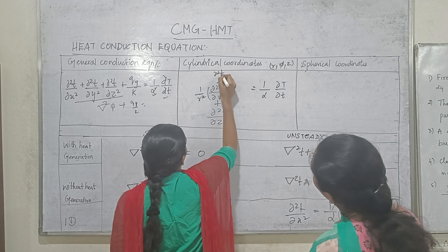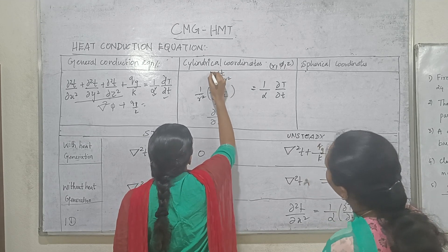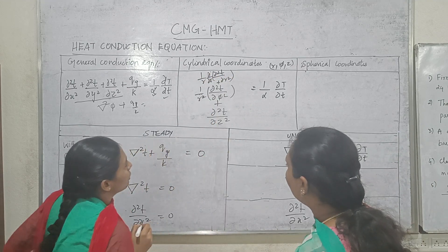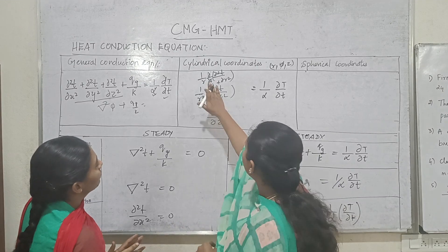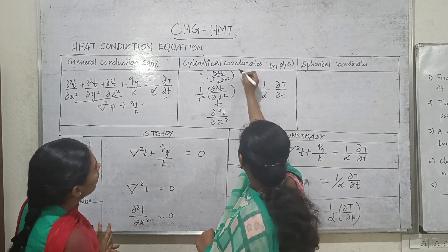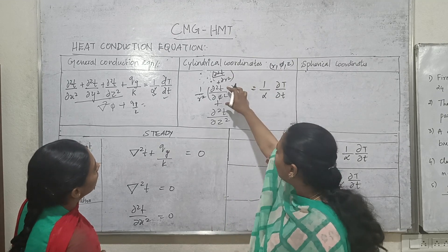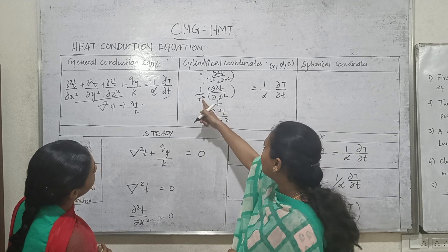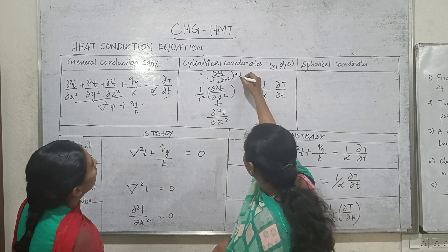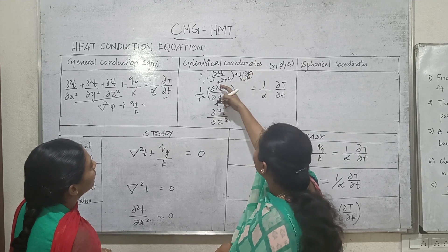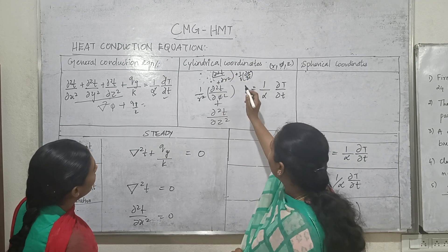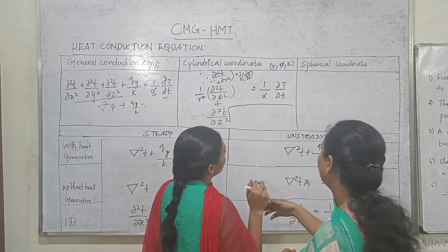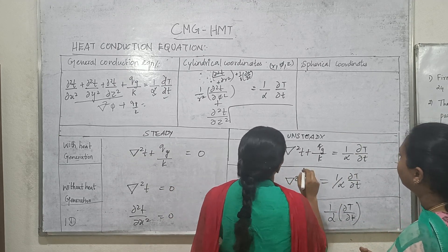For the r direction: ∂²T/∂r², plus (1/r)·∂T/∂r. Combined with the φ and z terms, this gives the full cylindrical heat conduction equation: ∂²T/∂r² + (1/r)·∂T/∂r + (1/r²)·∂²T/∂φ² + ∂²T/∂z² = 1/α · ∂T/∂t.